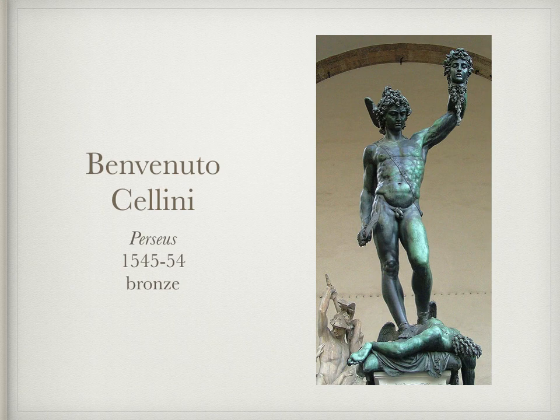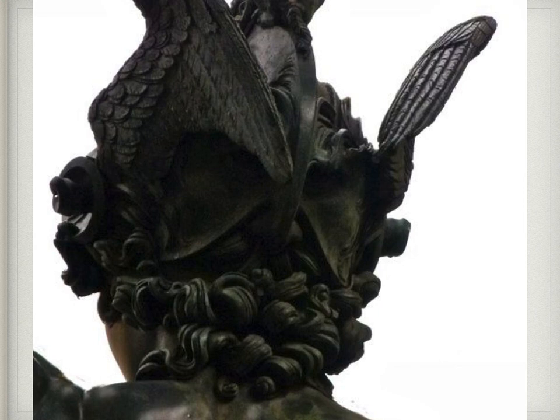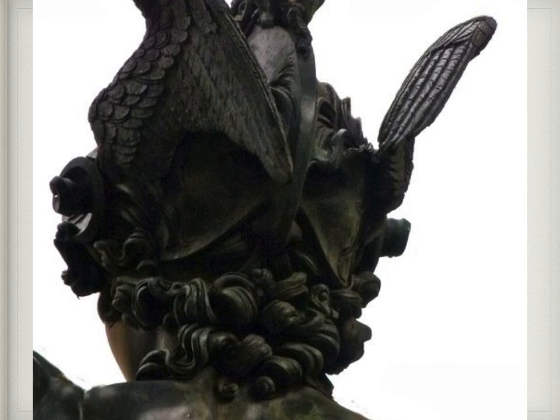Interestingly, many people argue that if you look at the sculpture from behind, in the back of Perseus' helmet you can see that the sculptor Cellini has actually put his own portrait into the back of the work.